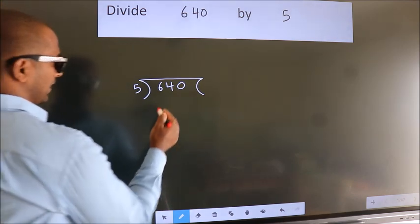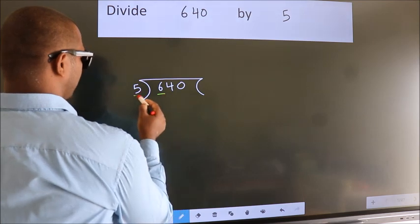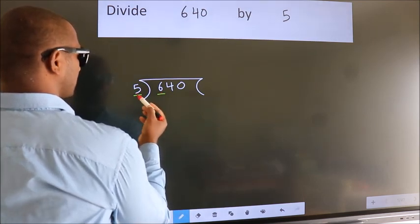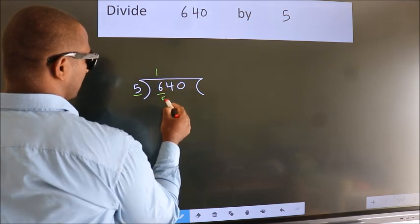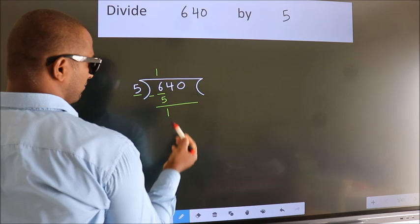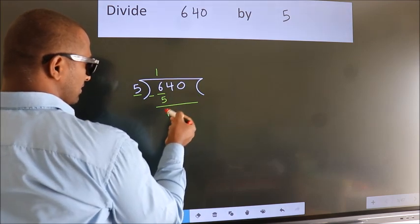Next, here we have 6, here 5. A number close to 6 in 5 table is 5 once 5. Now, we should subtract.